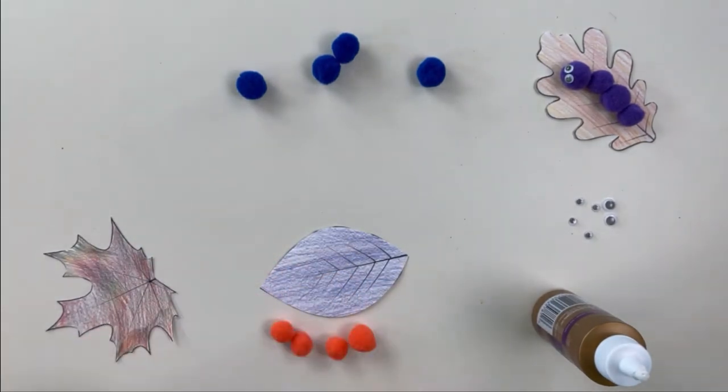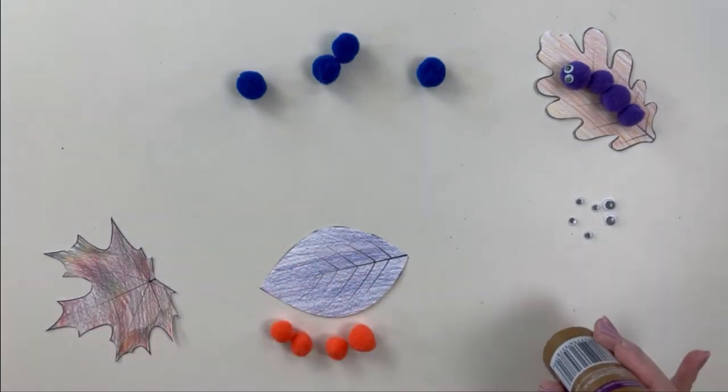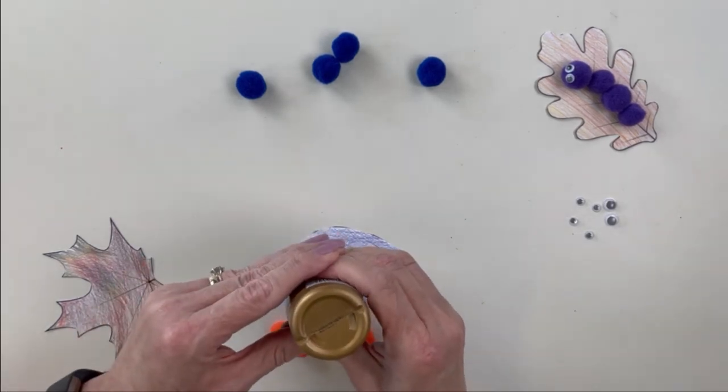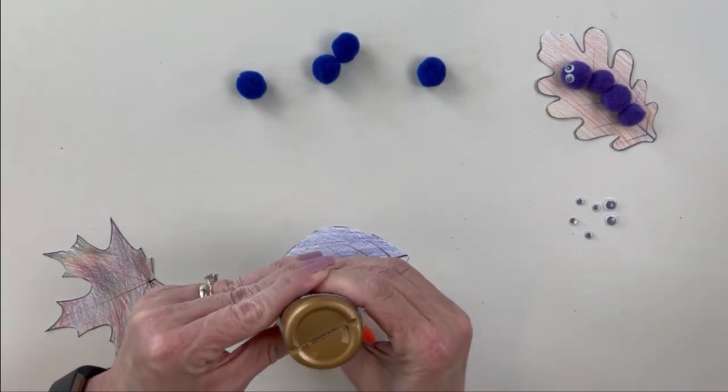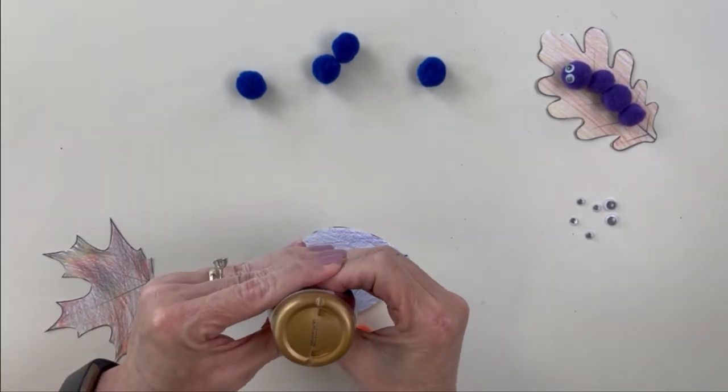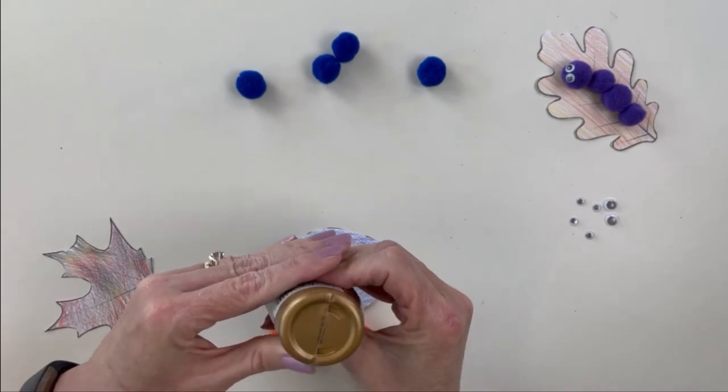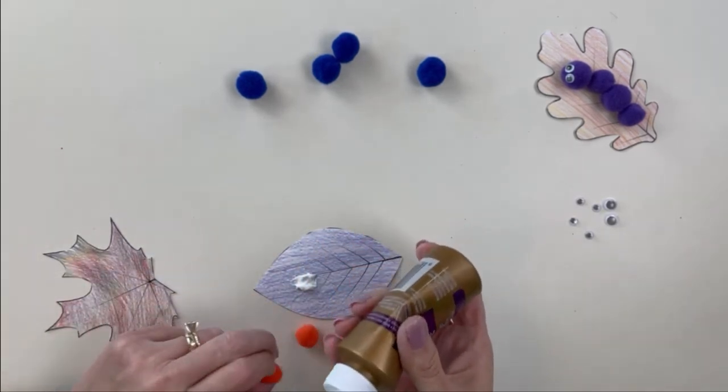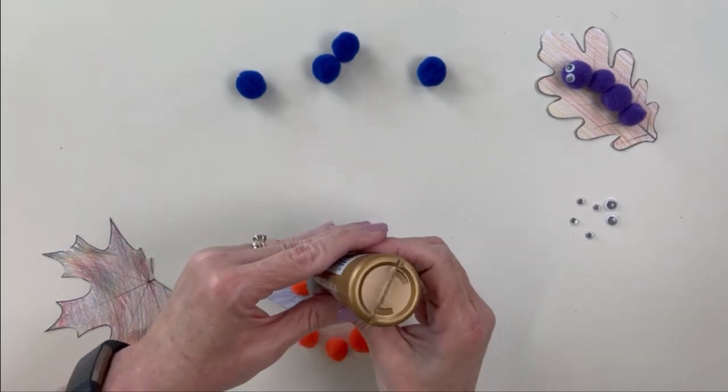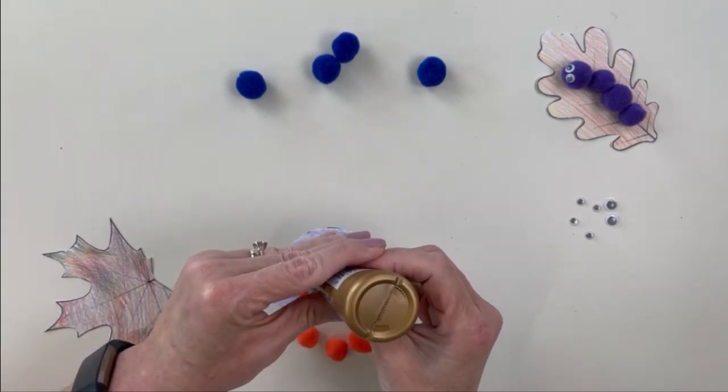Okay, so we have our orange pom-poms and we're going to take our glue and we're going to put, well, we're going to put it... okay, we got glue. All right, we're going to put one glue there and we're going to glue the other pom-poms right behind it.